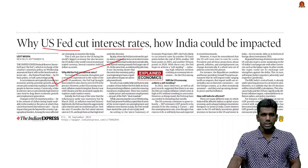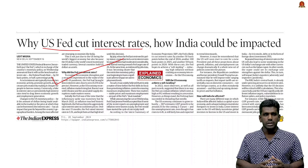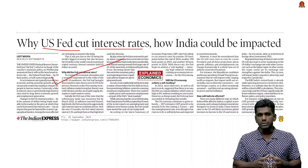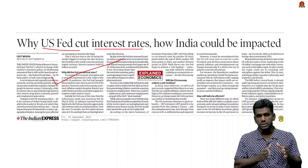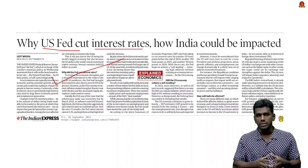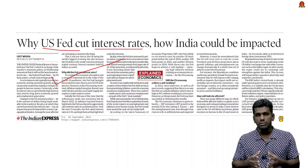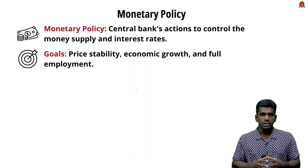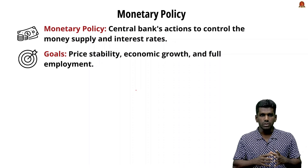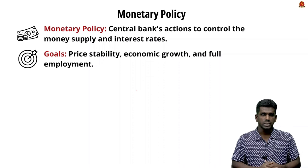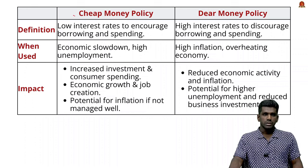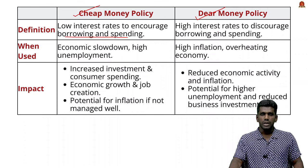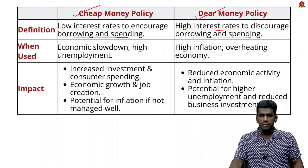The US Federal Reserve has reduced interest rates by 0.5 percentage points — the first reduction since the COVID-19 pandemic — aimed at boosting economic growth in the US. When the Federal Reserve reduces interest rates, more money becomes available for US companies, leading them to invest more in the global market, including India, increasing foreign investment there. This is a monetary policy action. Monetary policy is a central bank's action to control money supply and interest rates, with goals of controlling inflation and maintaining price stability.